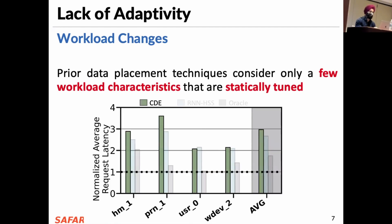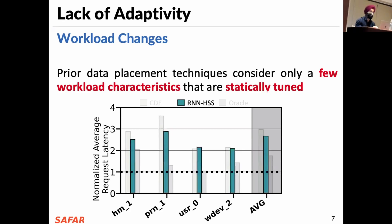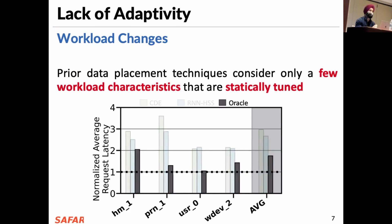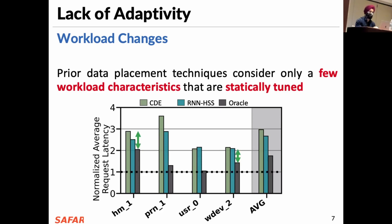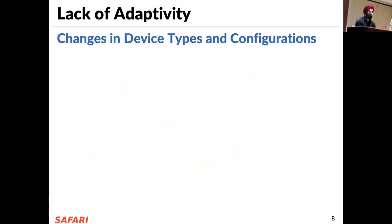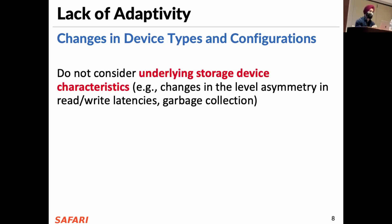Here we show average request latency of four sample workloads and also the average across all different workloads evaluated for a CDE policy, which is a state-of-the-art heuristic-based policy, and we also show the RNN HSS policy, which is a supervised learning technique. We compare these policies to an impractical Oracle which has knowledge of future I/O access patterns. The lower the request latency the better. We observe that baseline policies provide reasonable performance under specific workloads while for others they show much lower performance than Oracle — on average a performance loss of 41.1% compared to an Oracle. Considering only a limited number of workload characteristics leads to a significant performance gap.